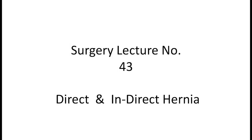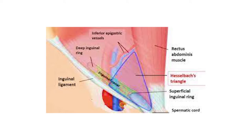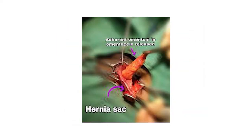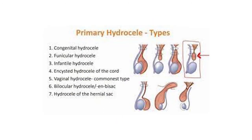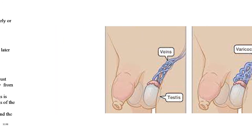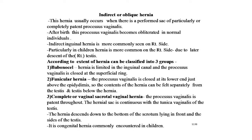Welcome again students to surgery lecture number 43, that is direct and indirect hernia. In this lecture we will learn: indirect or oblique hernia, direct hernia, differentiating features between indirect and direct inguinal hernia, differences between enterocele and omentocele, differential diagnosis of encysted hydrocele of the cord, varicocele, and treatment of hernia including herniotomy, herniorrhaphy, and hernioplasty.